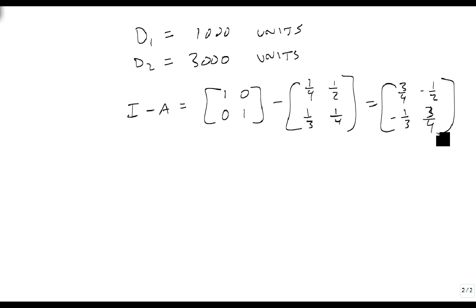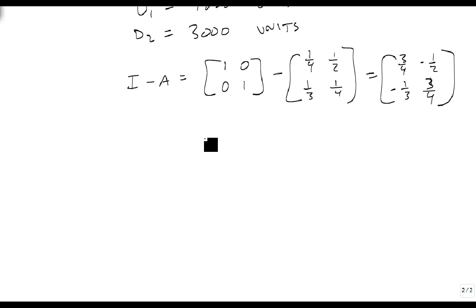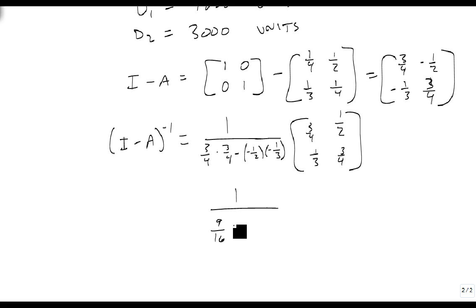Now we need to invert this matrix C, and we're going to use the formula to do that. So when we invert the I minus A, it's going to be 1 over the 1,1 times 2,2, minus the 2,1 and the 1,2. And we're going to times that by swap places and change signs. Well, 3/4 times 3/4 is 9/16, and we're going to subtract from that 1/2 times 1/3, which is 1/6. So 9/16 minus 1/6.